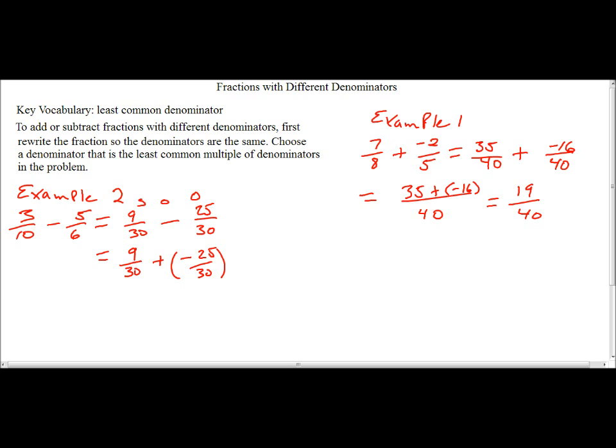Now we can take this and we will have 9 over 30, plus same, opposite, opposite, plus a negative 25 over 30. Let's go on and put our 30 in place. Here we'll have 9 plus a negative 15.